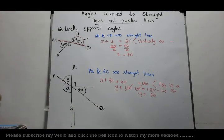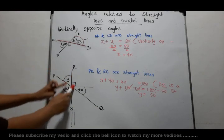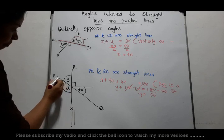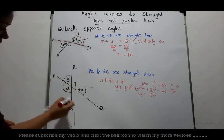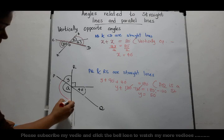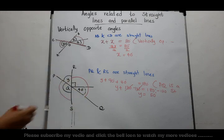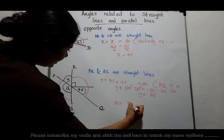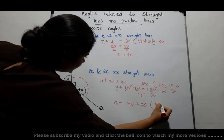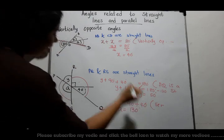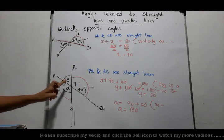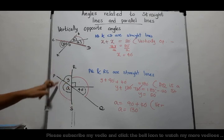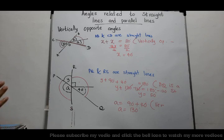Now we have to find A. Since PQ and RS intersect each other, angle A is vertically opposite to the angle of 90 plus 40 degrees. So A equals 90 plus 40 equals 130 degrees. Reason: vertically opposite angles. You can also solve using sum of angles on a straight line — both methods give the same answer, but using vertically opposite angles saves time.